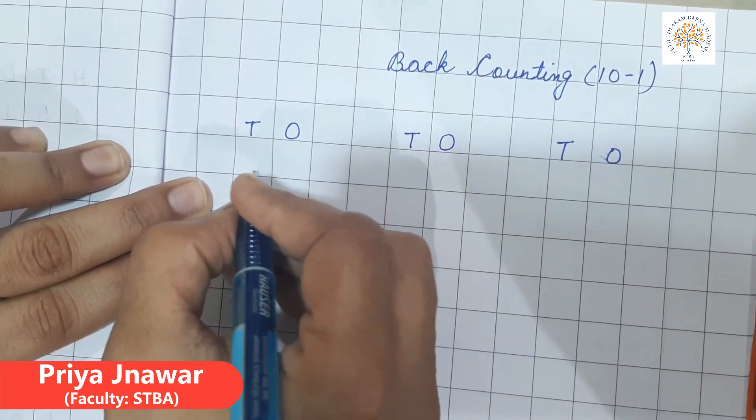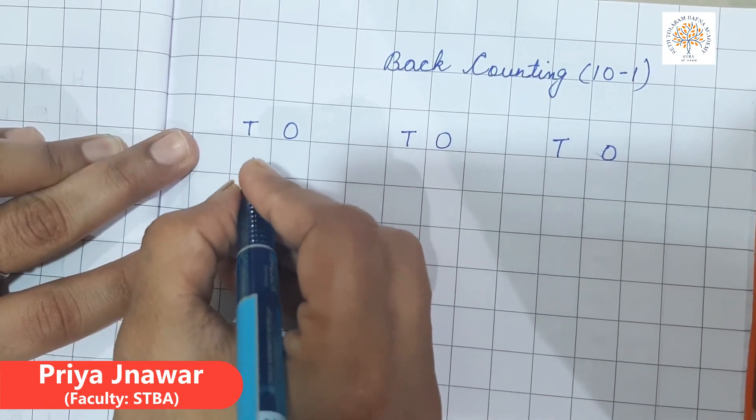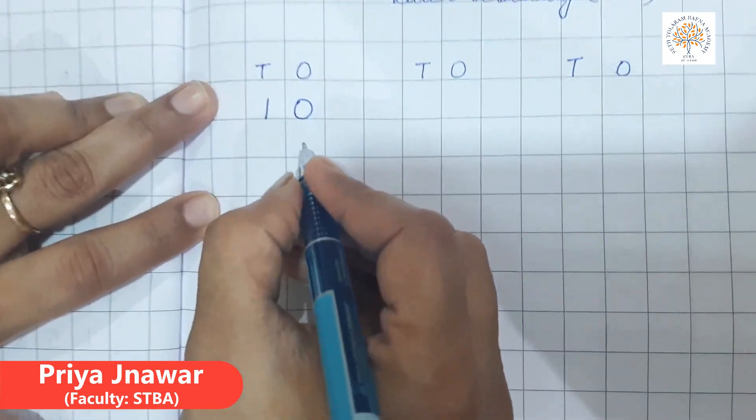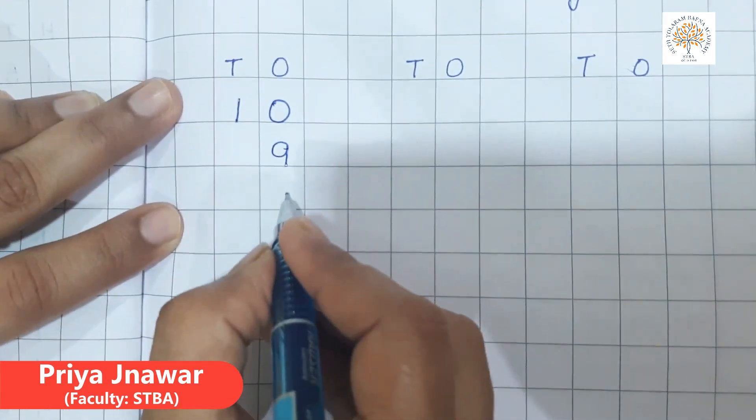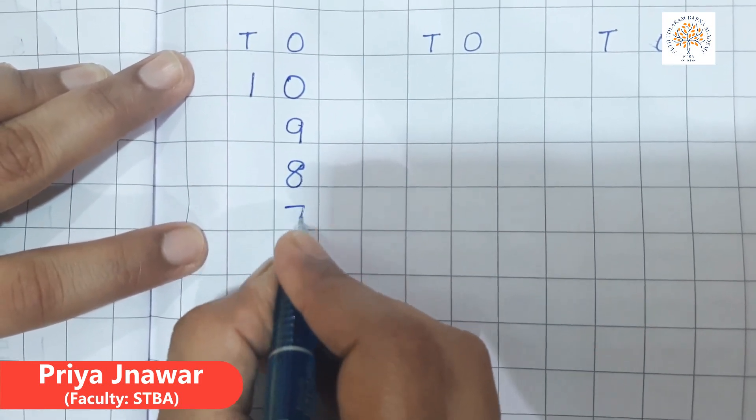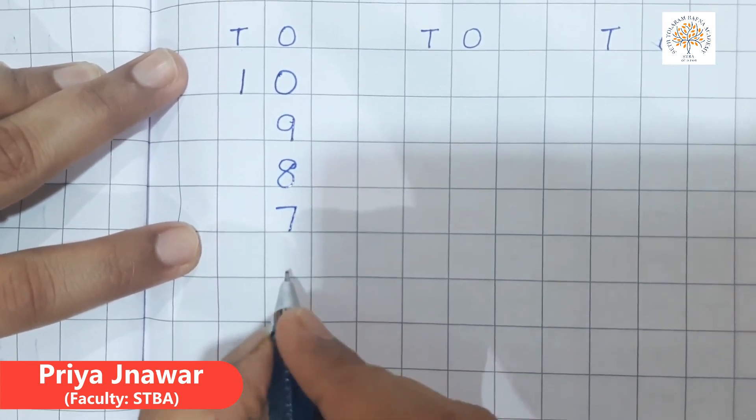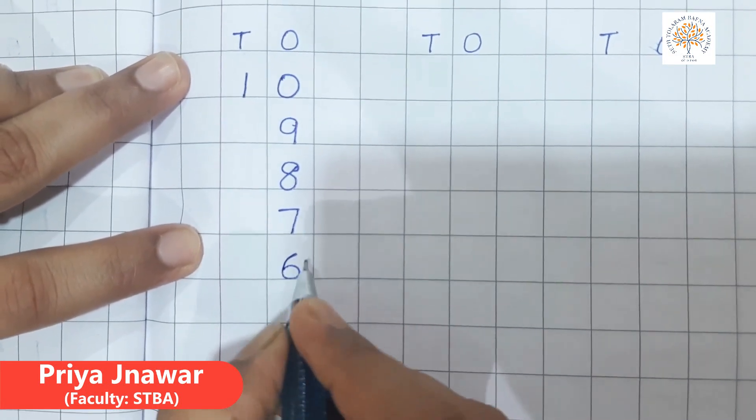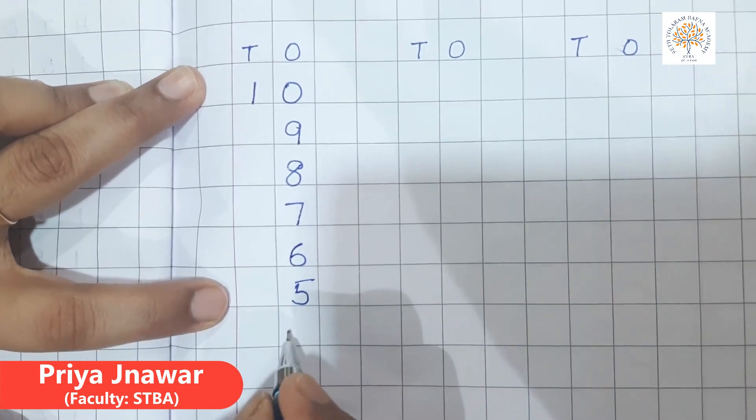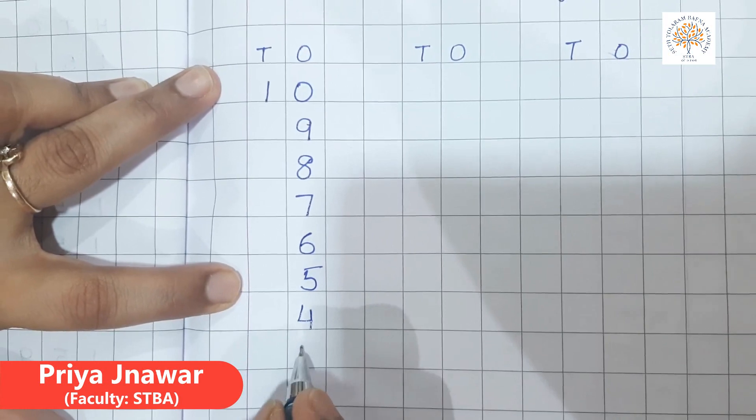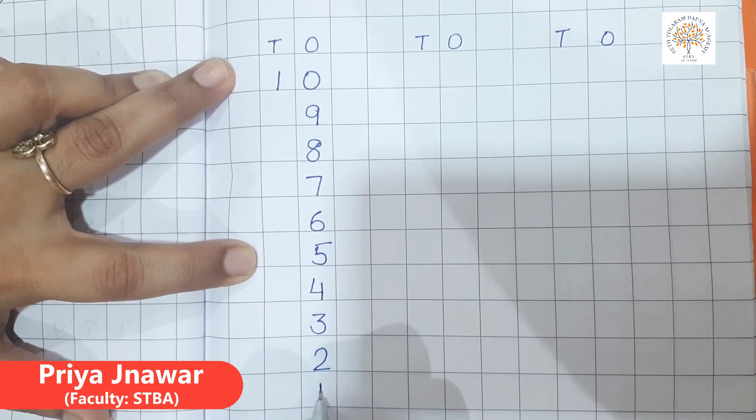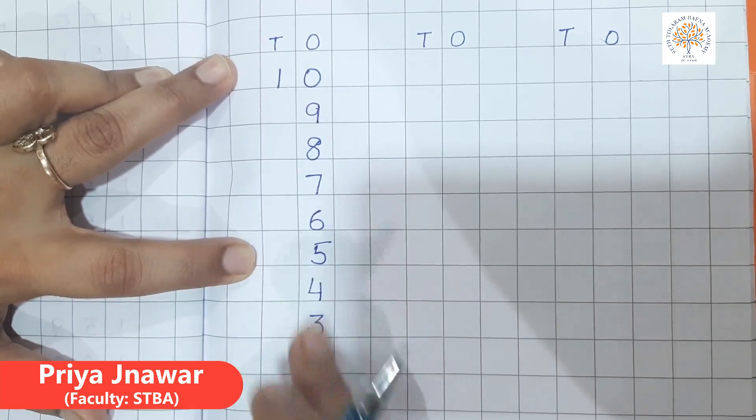First we will do 10 to 1. First we will write 10, 9, 8, 7, 6, 5, 4, 3, 2, 1. So students, this is back counting 10 to 1. We are going back.